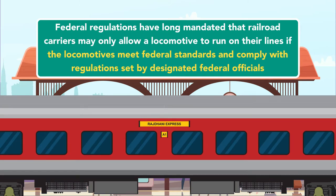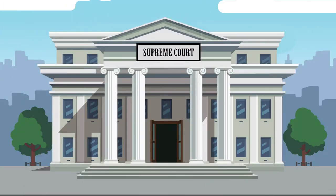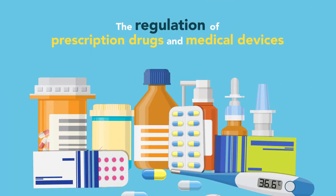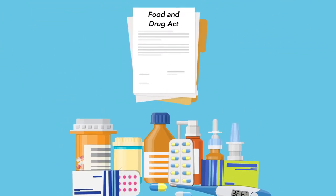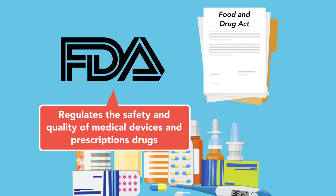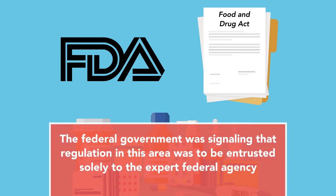Federal regulations have long mandated that railroad carriers may only allow a locomotive to run on their lines if the locomotives meet federal standards and comply with regulations set by designated federal officials. The Supreme Court inferred from successive pieces of legislation that the federal government was acting to establish a uniform national standard for railroad locomotive safety. This means that no product liability claims can be brought at the state level in the field of locomotive equipment, regardless of whether there is any conflict between state and federal laws. Another area of products liability law in which federal preemption arises concerns the regulation of prescription drugs and medical devices. The rationale has been that by passing the Food and Drug Act, a law that organizes a federal agency, the Food and Drug Administration, to regulate the safety and quality of medical devices and prescription drugs, the federal government was signaling that regulation in this area was to be entrusted solely to the expert federal agency.